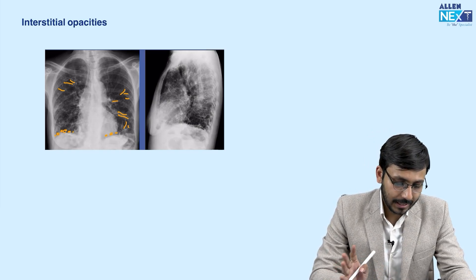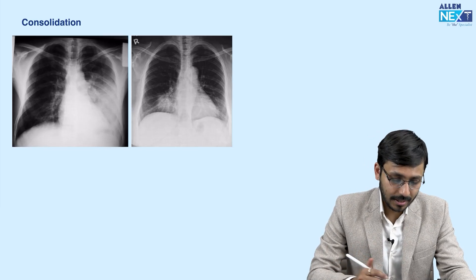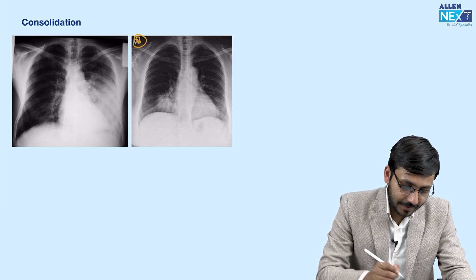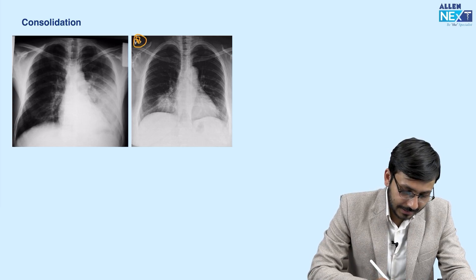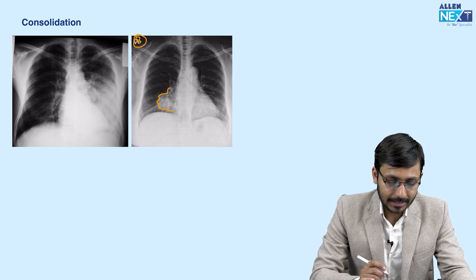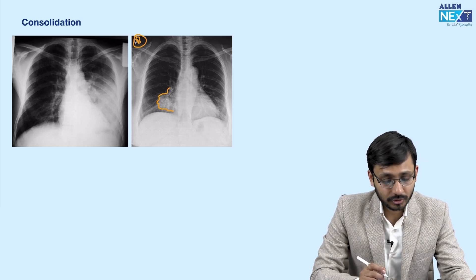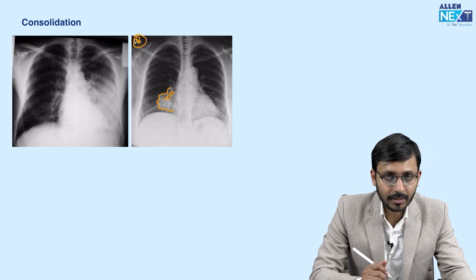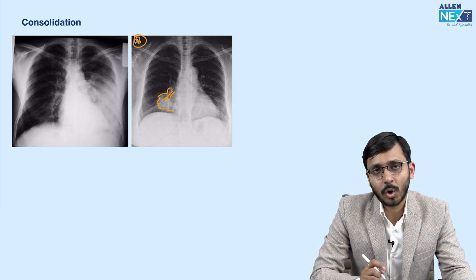Finally, an example of a consolidation. In the second image, we see an ill-defined fluffy opacity in the right lower zone, and again you see an air bronchogram within. So this is a consolidation.